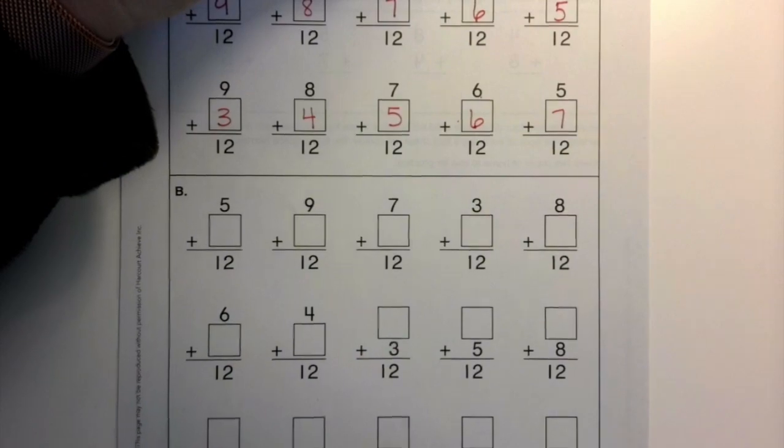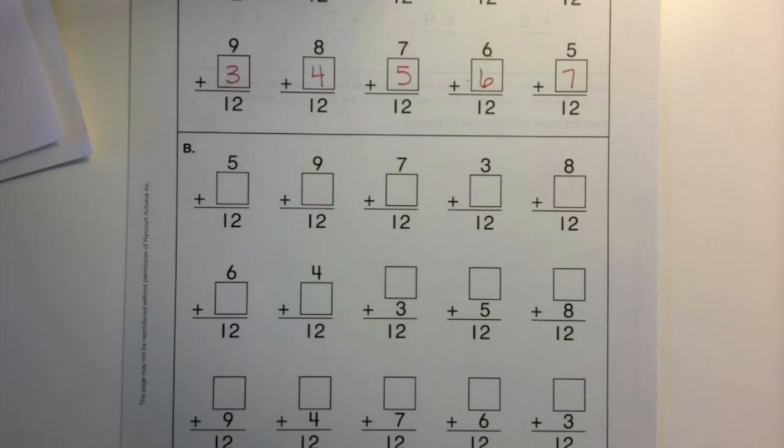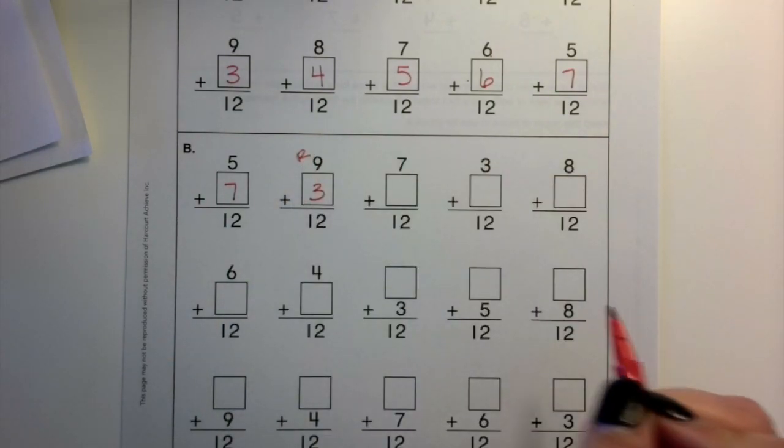Now, we have the same thing happening on the bottom, but this time the numbers and which addend is missing is switched around. So, you are going to work through the B side of this paper. And let's get started at it. 5 plus what is 12? 6 plus what is 12? 9 plus what is 12? 3. That's review.